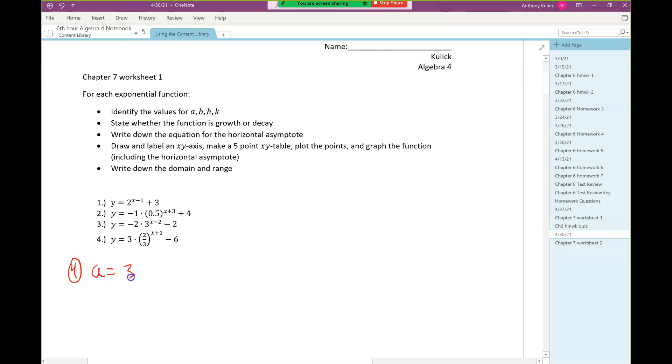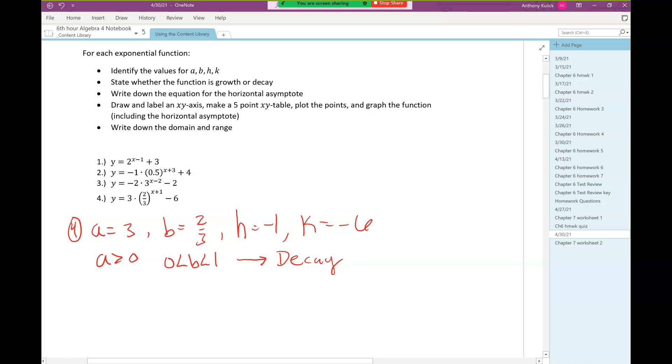So a is 3, b is 2/3, h is negative 1, and k is negative 6. Since a is positive and b is between 0 and 1, the horizontal asymptote is always y equals k, so that's going to be y equals negative 6.